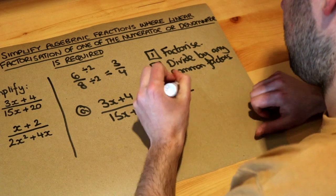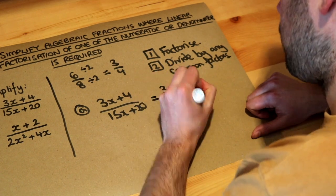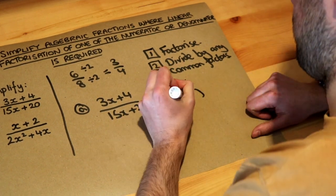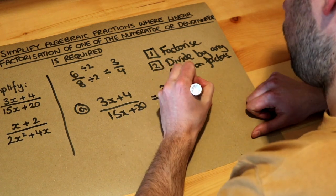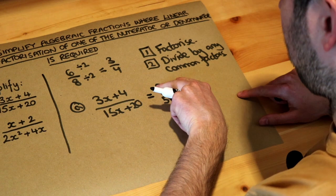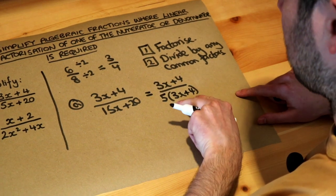They both have a common factor of 5. So if we factorize the 5 out, 5 times what is 15x, it's 3x, and 5 times what is 20? It's plus 4. Oh, now this is quite nice because we've got 3x plus 4 at the top and at the bottom.